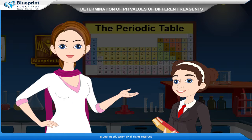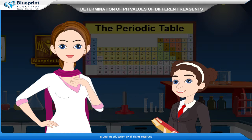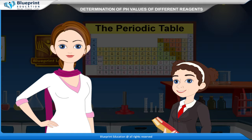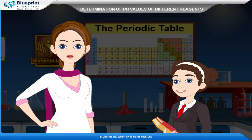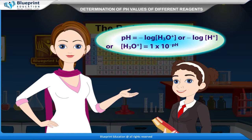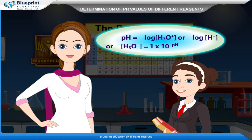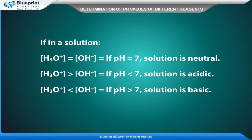pH means potens hydrogen. This scale was discovered by Sorenson in 1909. This scale expresses the hydronium H3O+ ion concentration in a solution. The pH of a solution is defined as the negative logarithm of hydronium ion or hydrogen ion concentration. pH = -log[H3O+], or -log[H+], and H3O+ = 1 × 10^(-pH).